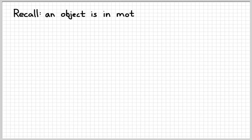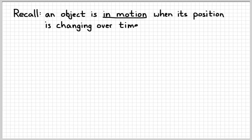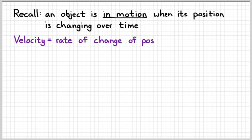First, let's recall a few things. Motion simply means that the position of an object is changing over time. So if something is in one location, then it goes to another location, we say that it has moved. And then we can describe the motion of that thing by using the term velocity, which is the rate of change of position over time — in other words, how quickly is the position changing?